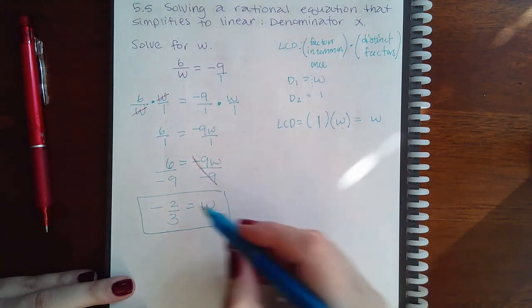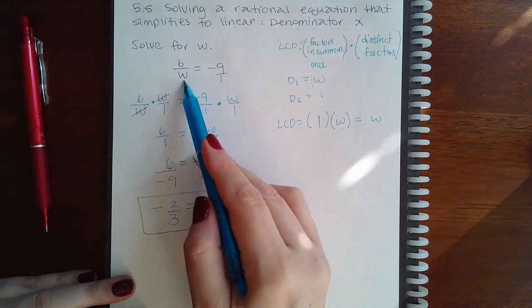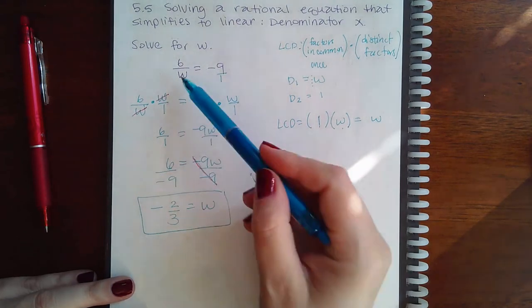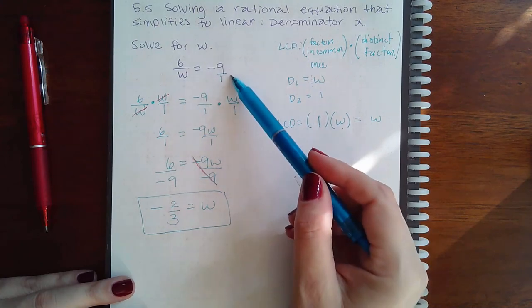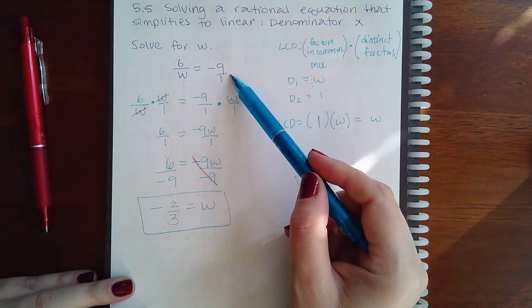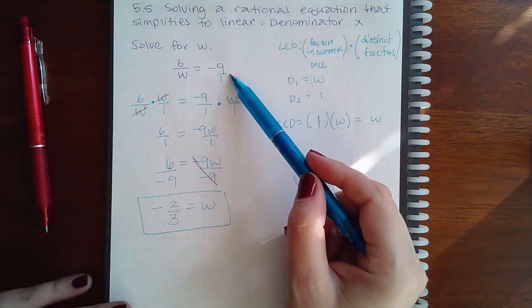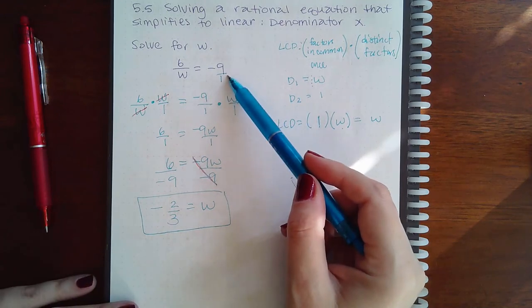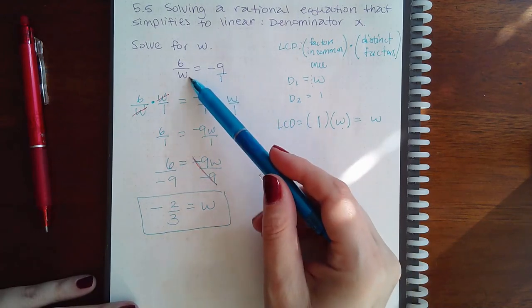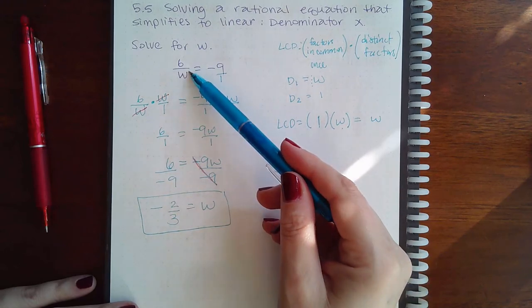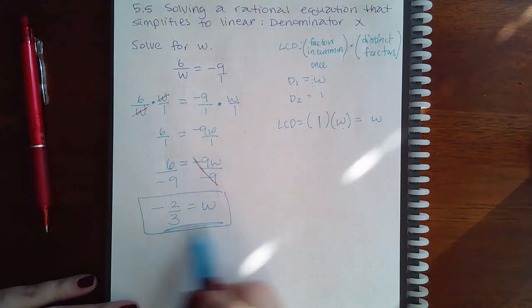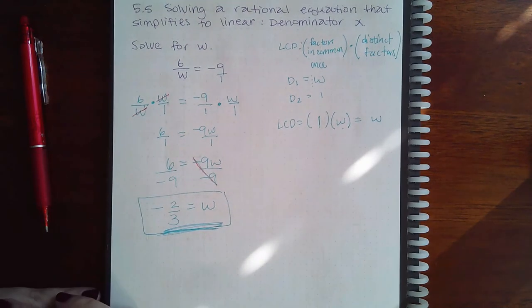So since my denominator is w, and w equals negative 2 thirds, it's not going to make this denominator 0. And this side did not originally have a denominator shown. So there's nothing to check on this side. So as long as this denominator is not 0 when I plug in that solution, then this is, in fact, the actual solution, the actual answer.